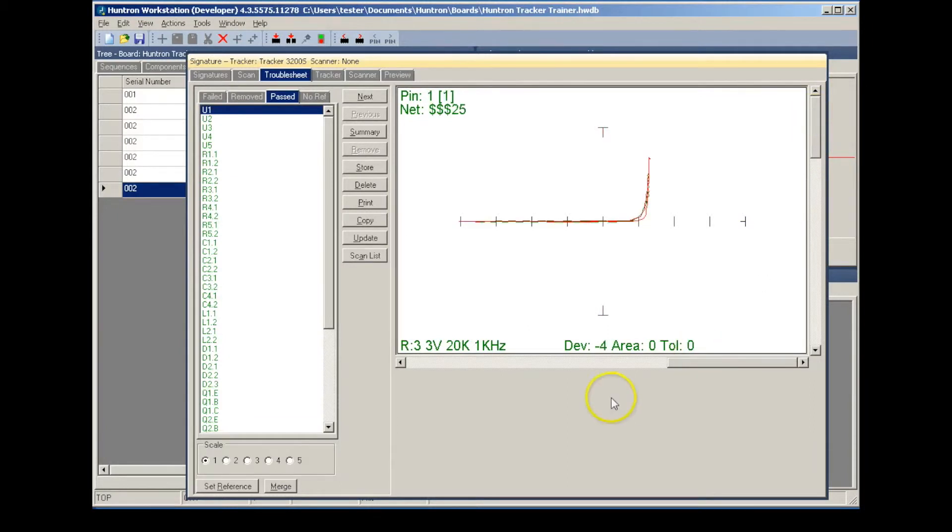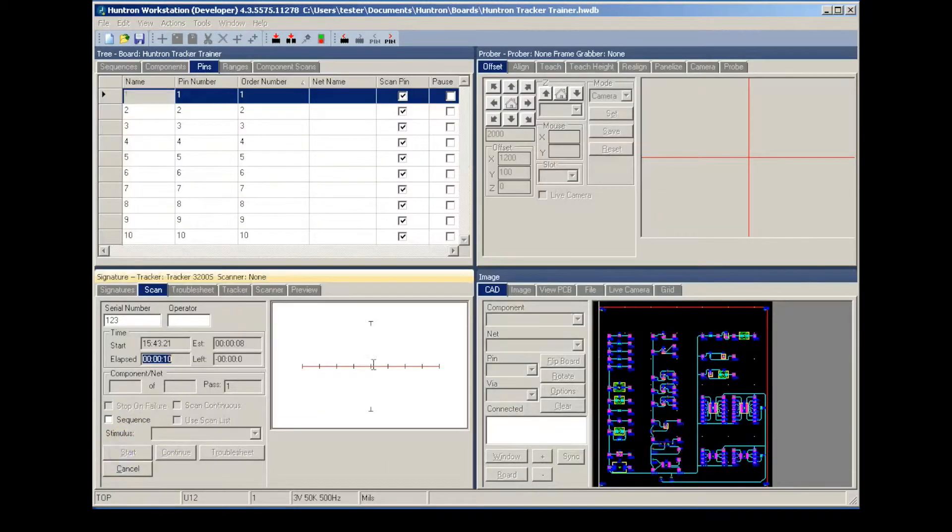The tracker is controlled through a USB port. Scanning a component is fast and storing component signatures into a PCB database eliminates the need for a known good comparison board.